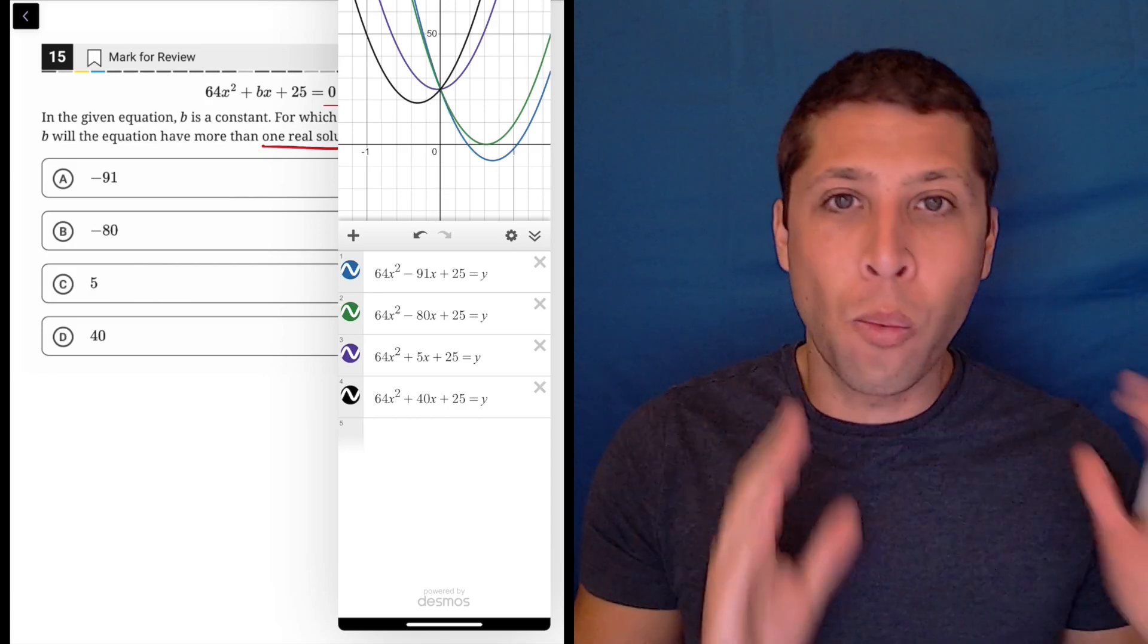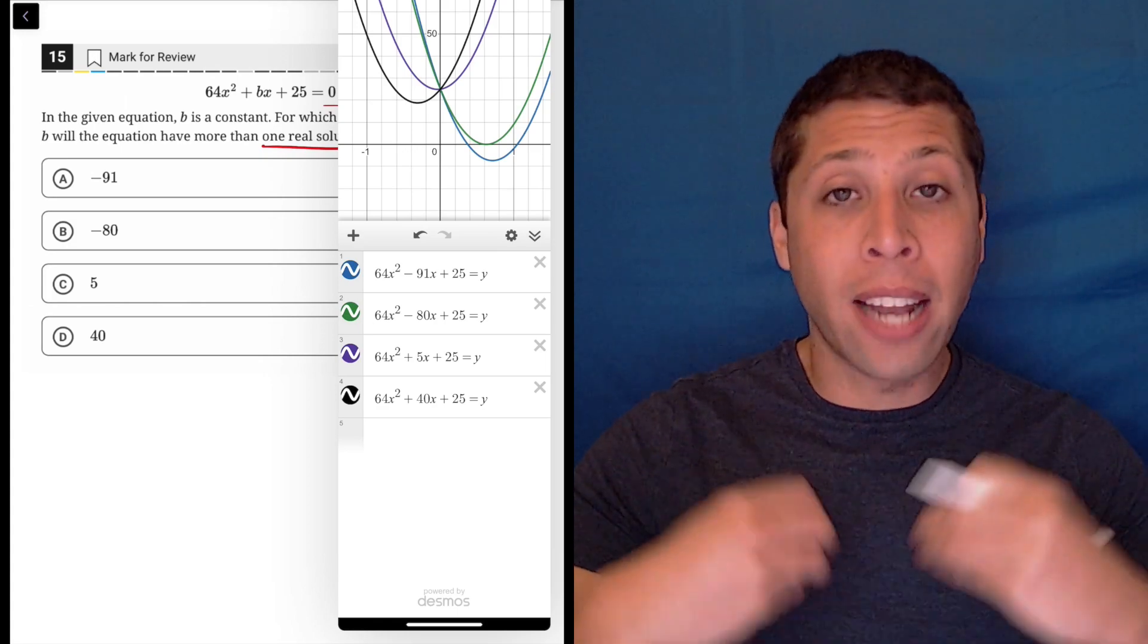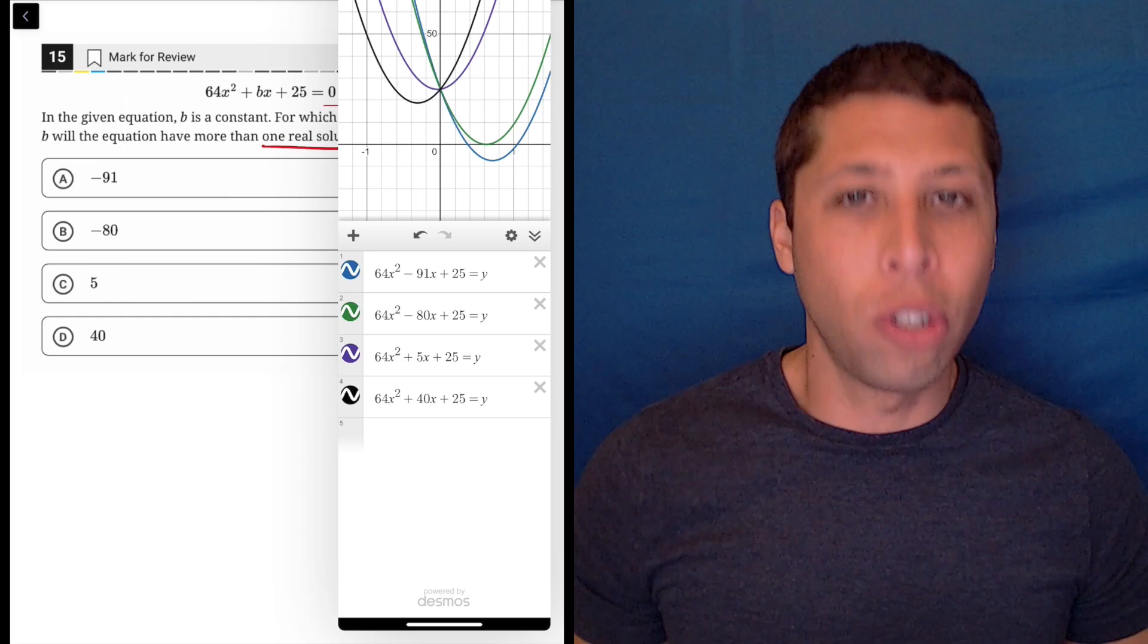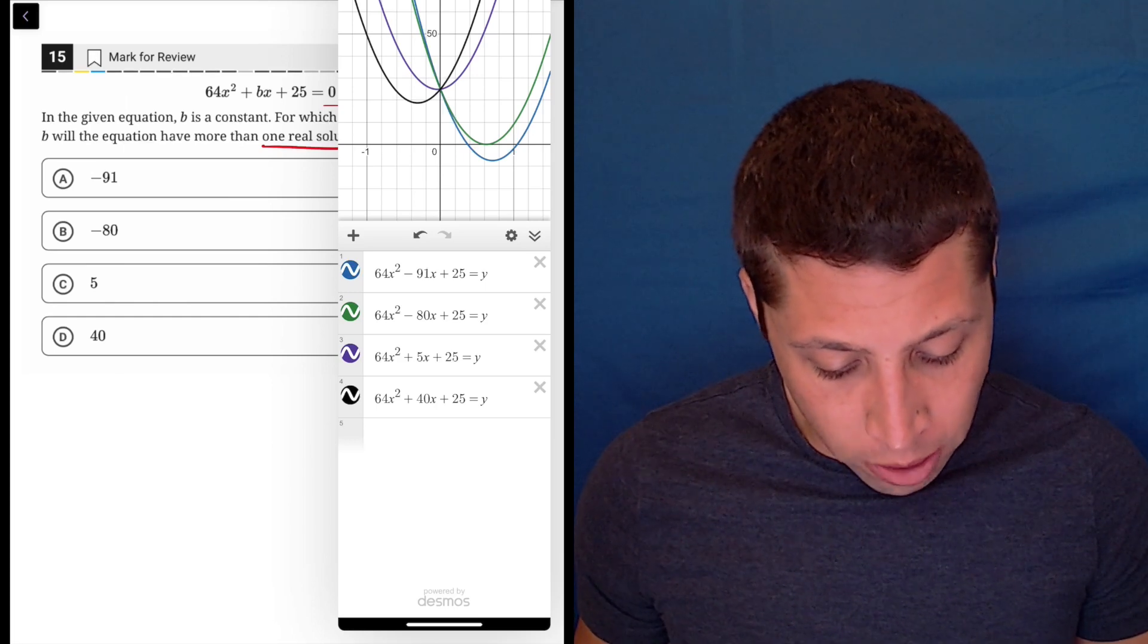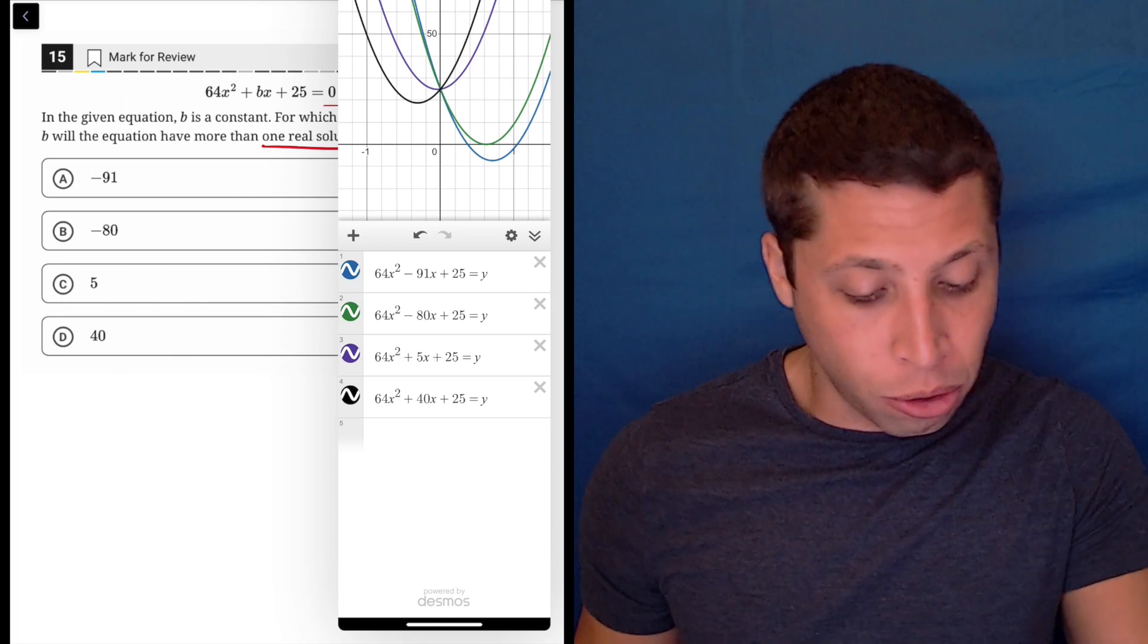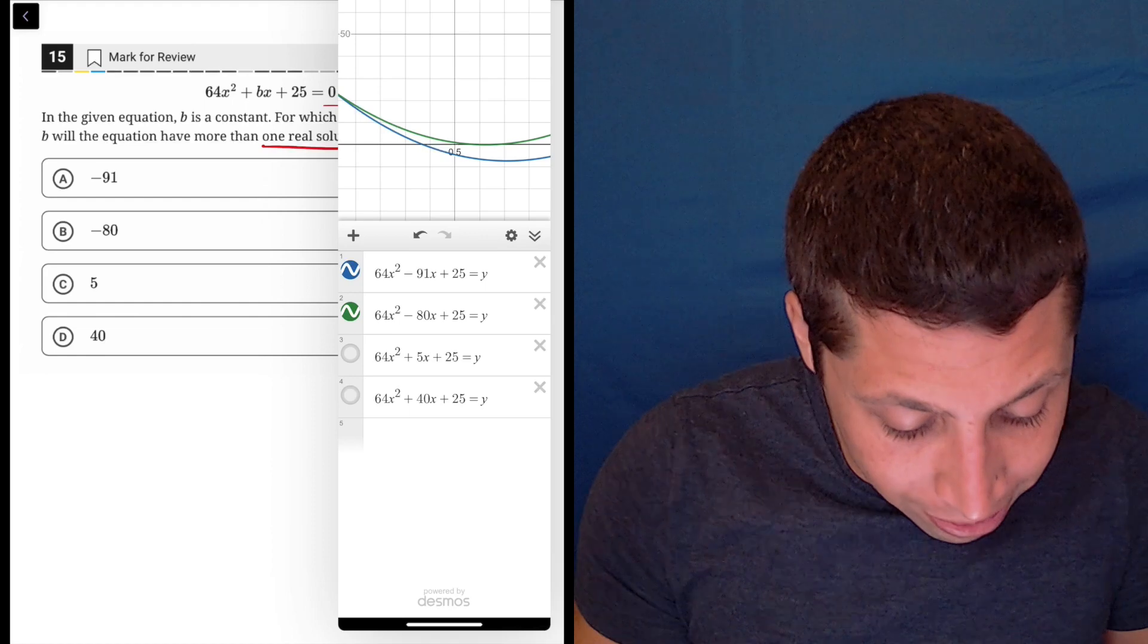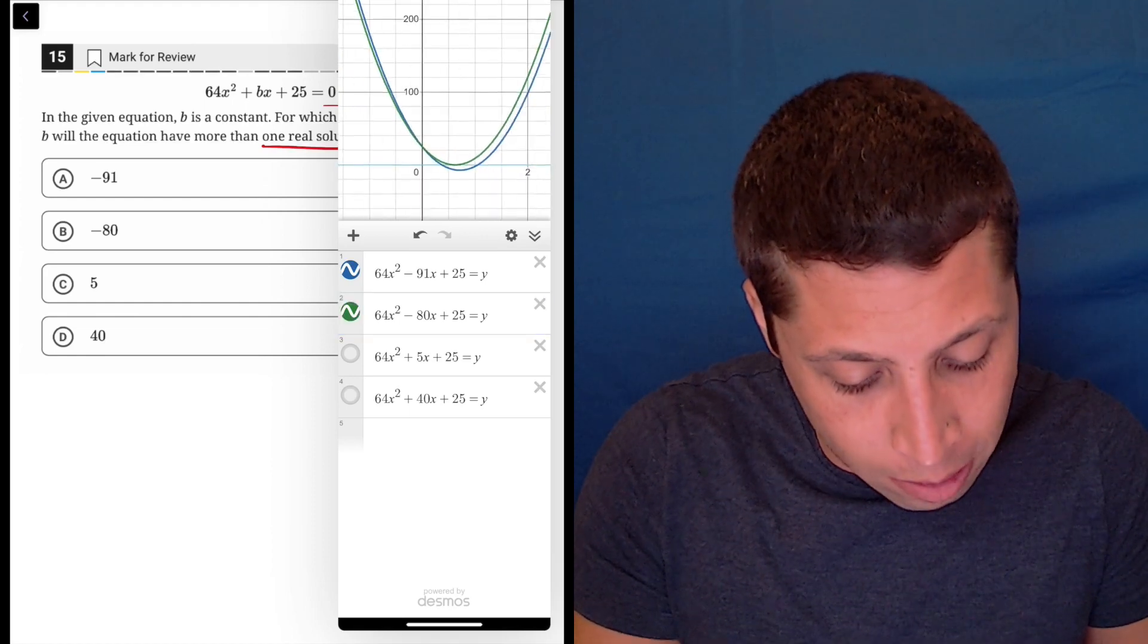So I just put it as a y so that I can really make this connection that what they're asking for is, if we had a normal quadratic equation, we're trying to figure out how many times does it cross the x-axis, how many solutions does it have. And we can see that that blue one is the one that has more than one. So the black and the purple have no solutions. They're not crossing, so I'm going to get rid of those. The green, it looks like it's just touching it.